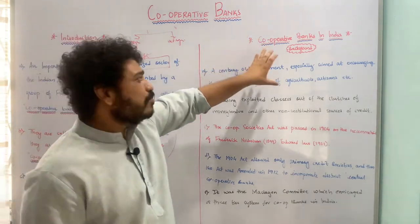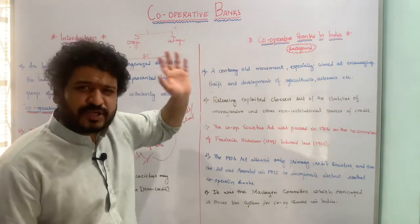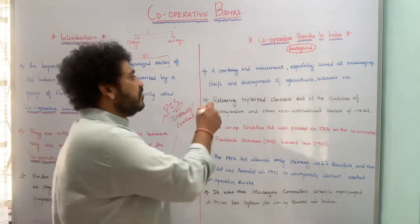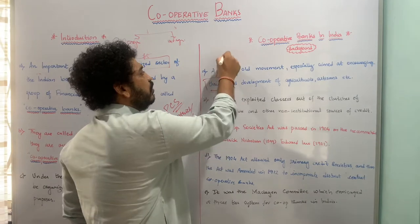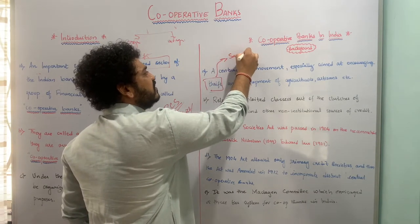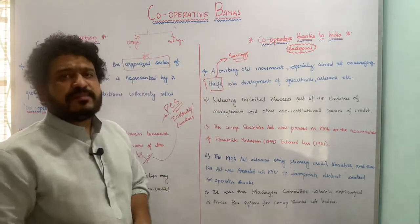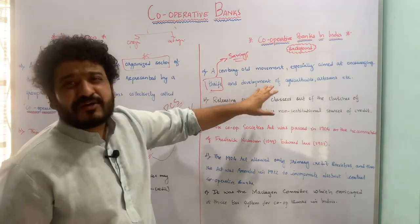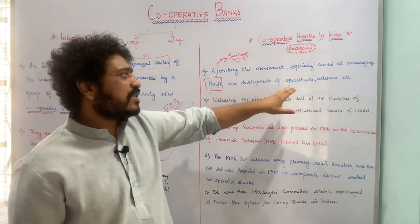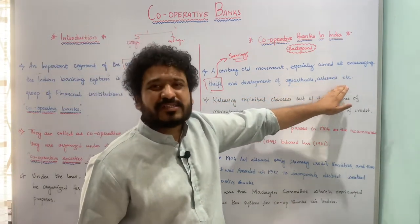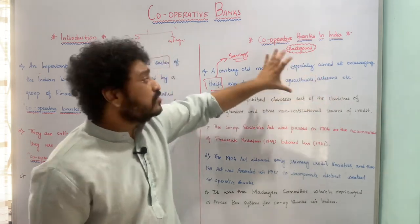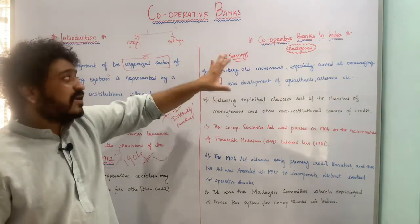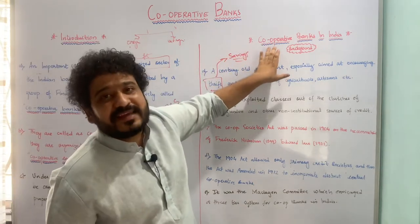The cooperative movement in India is a century old and was specially designed to encourage something called thrift — meaning savings. This was the main motive of the cooperative movement, along with the development of certain segments of society: the agriculturalists, the artisans, the small entrepreneurs, and business persons. This century-old movement culminated into what we call cooperative banking in India.